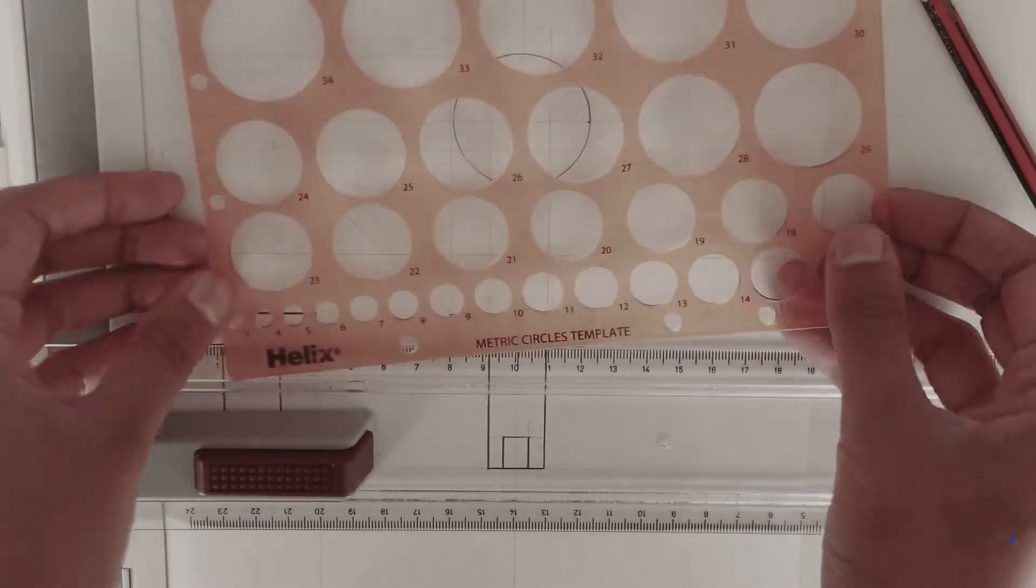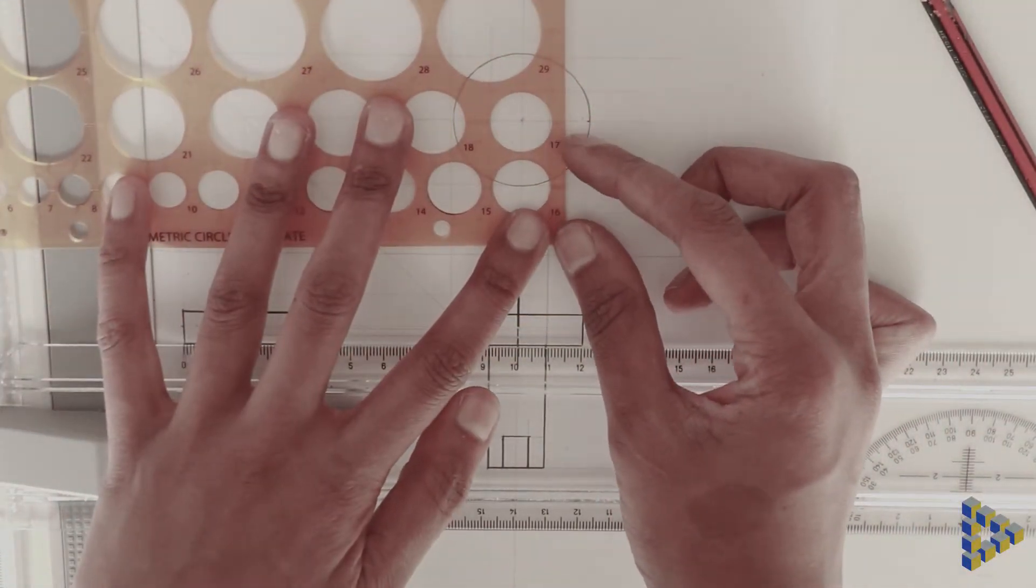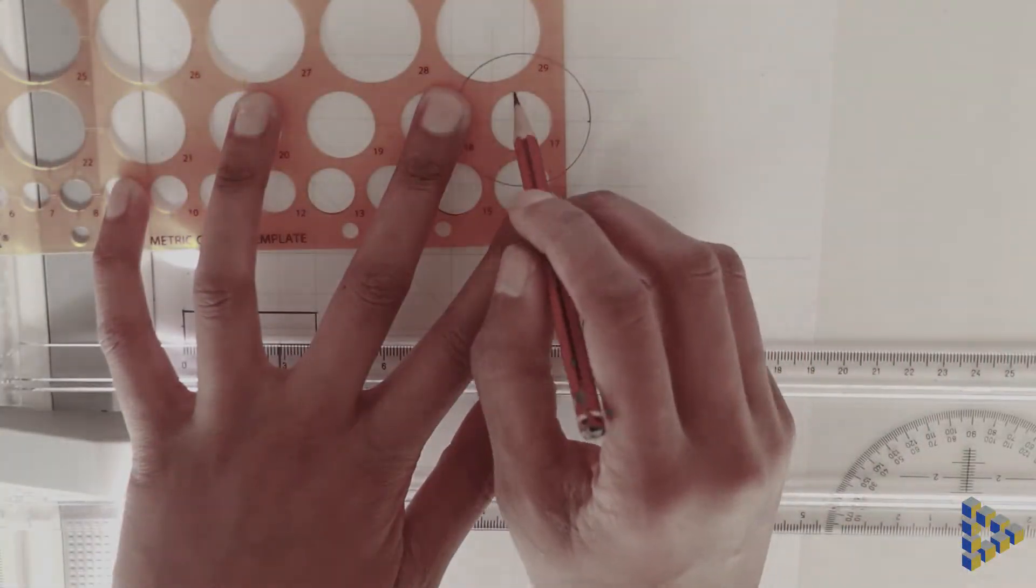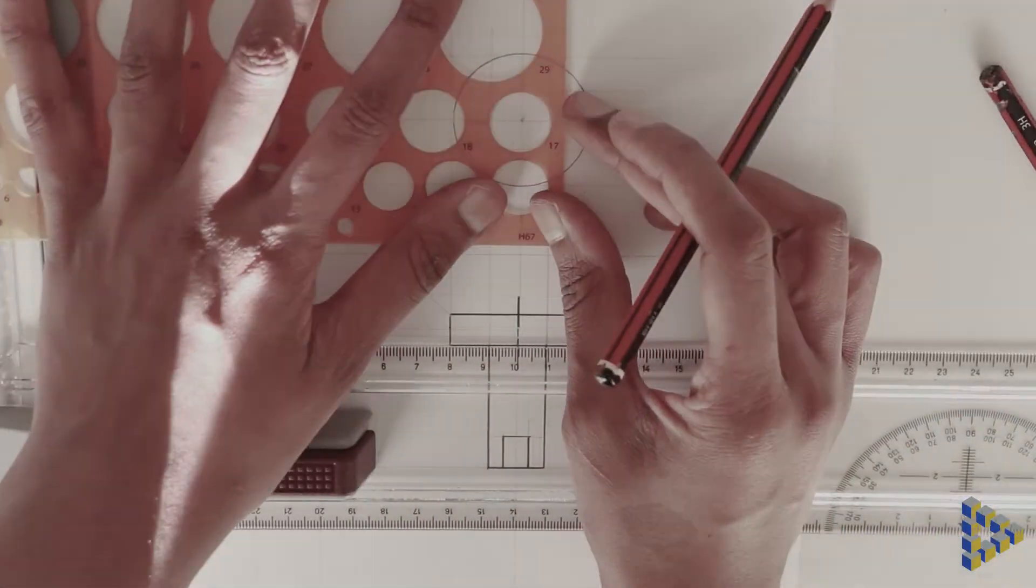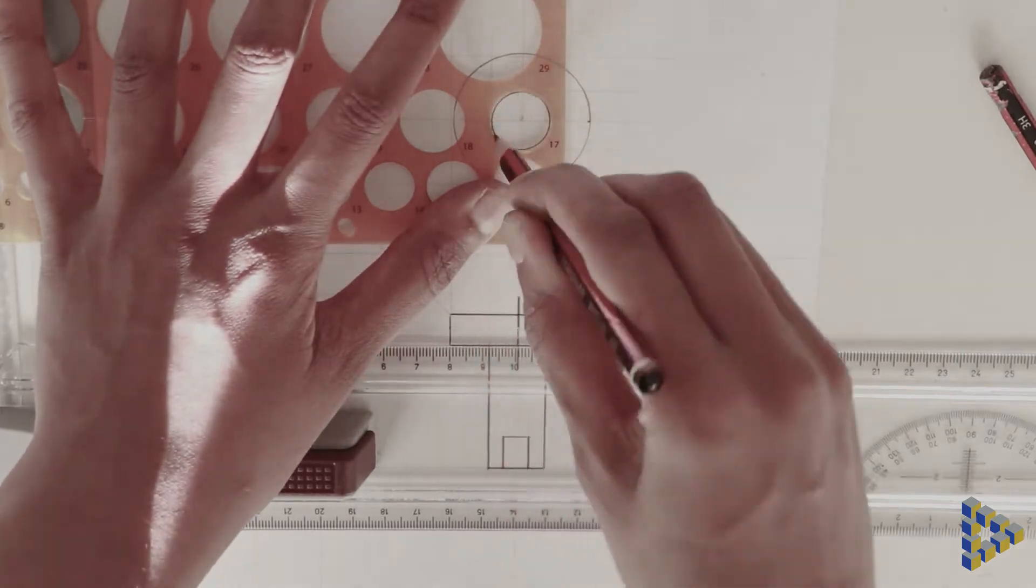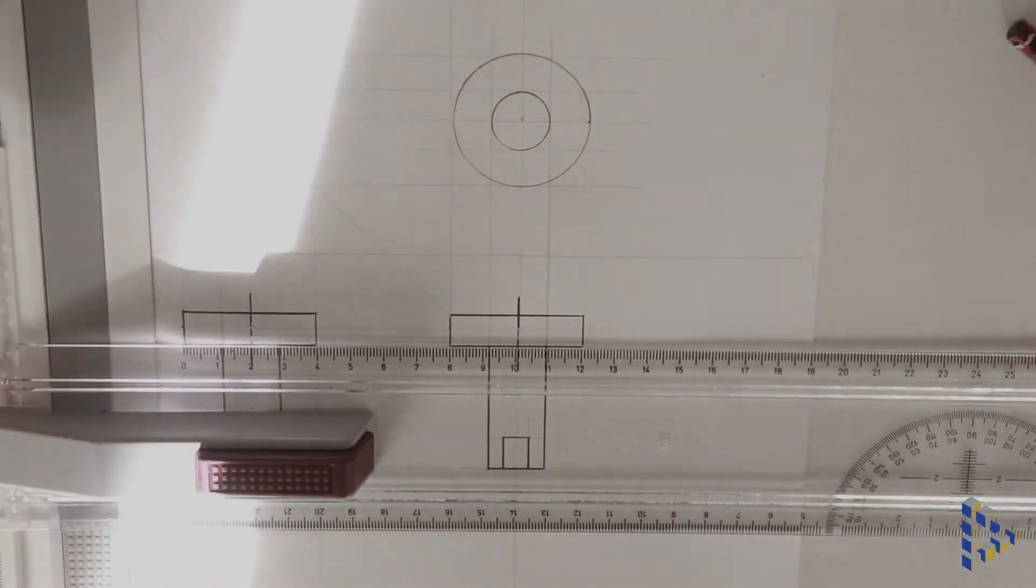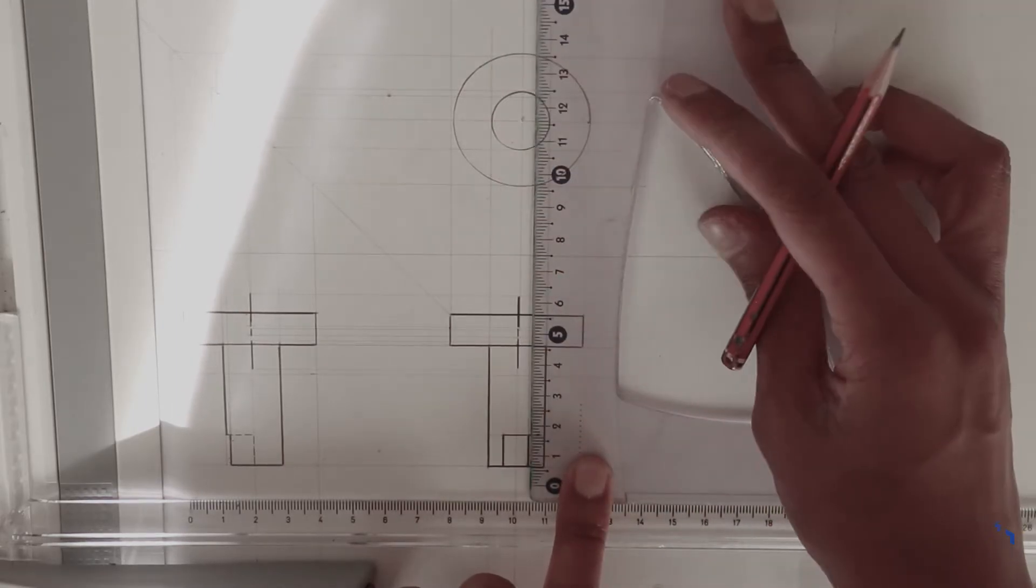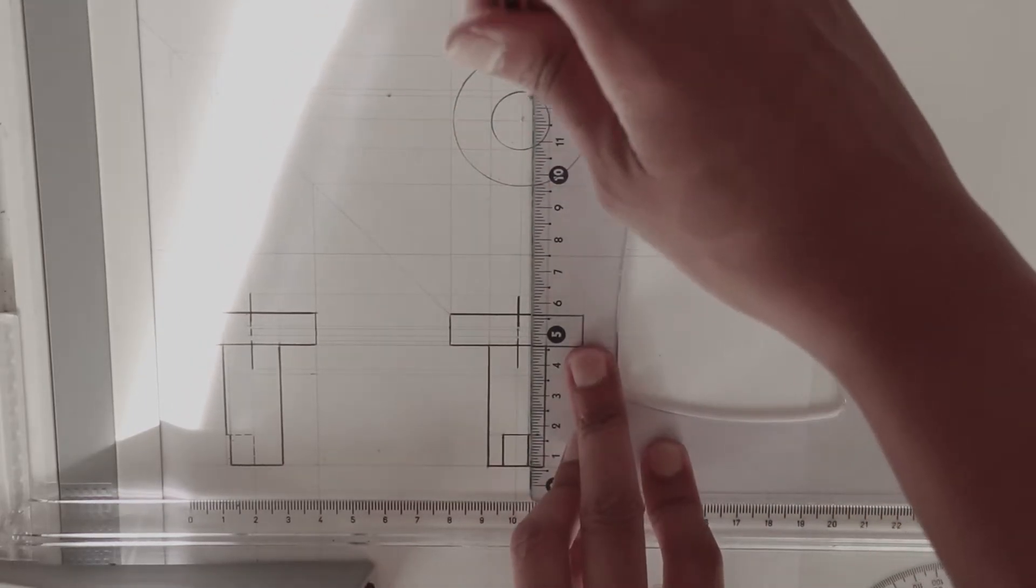You can use stencils for standard size circles such as this one. I used a 17mm diameter circle stencil. I matched up the circle stencil with the construction lines that I drew in earlier. Lastly, I draw in the cutout feature by following the same method.